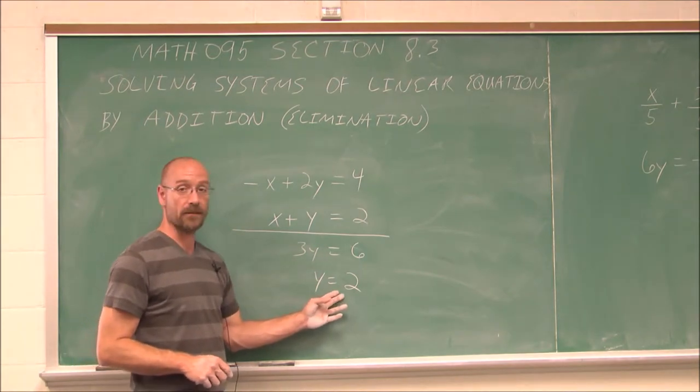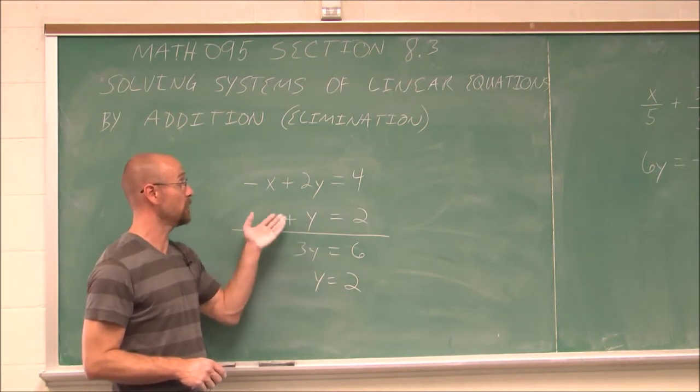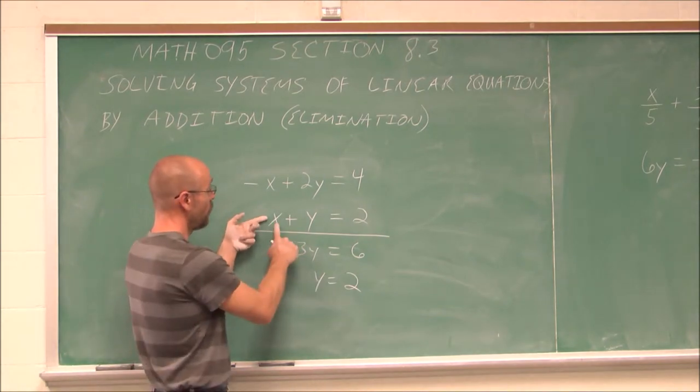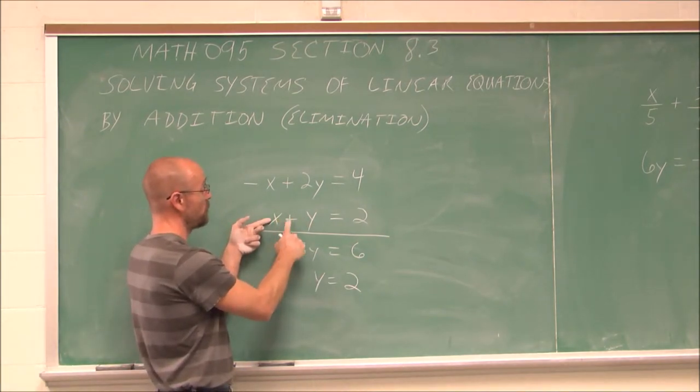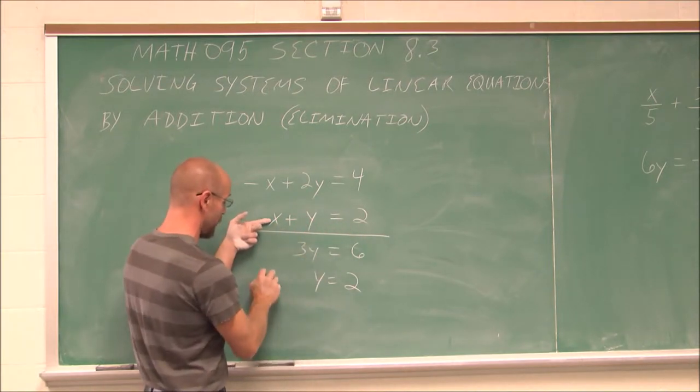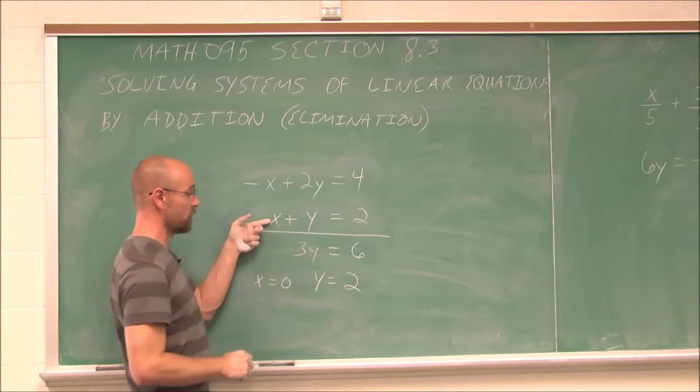Now, to find out what x is, all I have to do is go back to one of my equations and I'll just put it right in here. What is x if y is 2? Well, what plus 2 is 2? 0 plus 2 is 2. So I find that x would equal 0 for this equation.